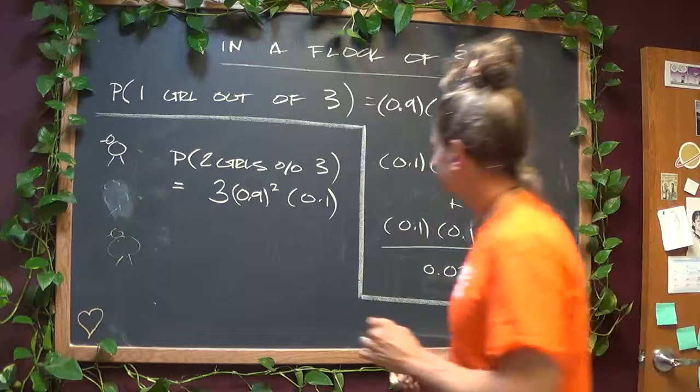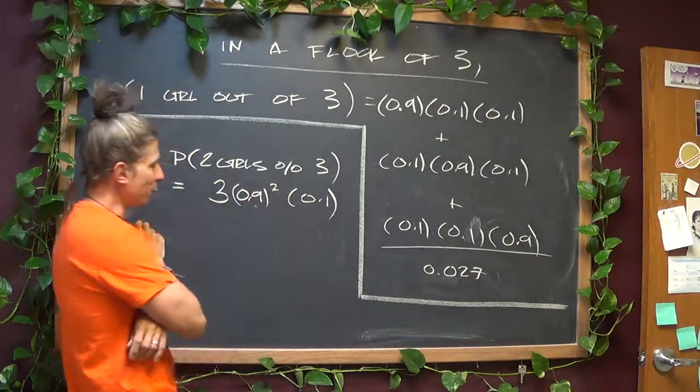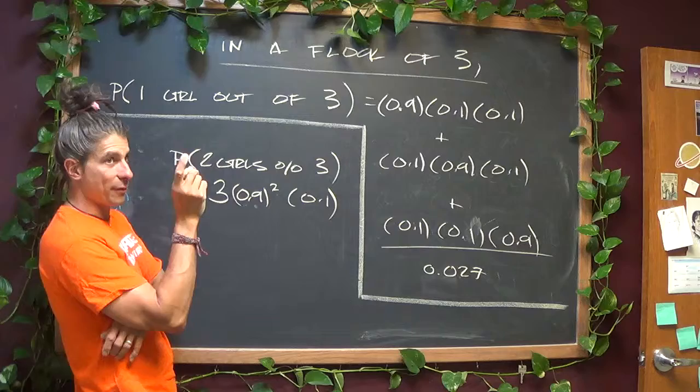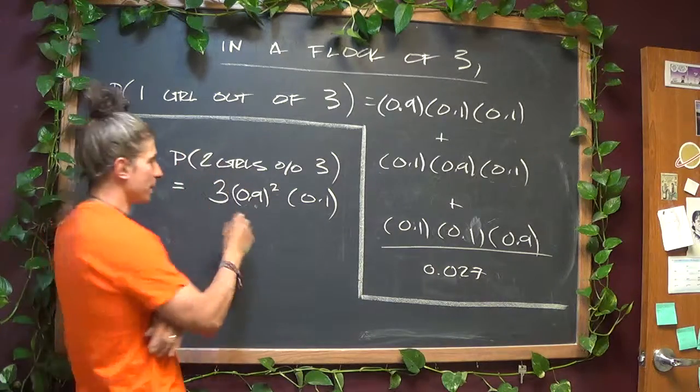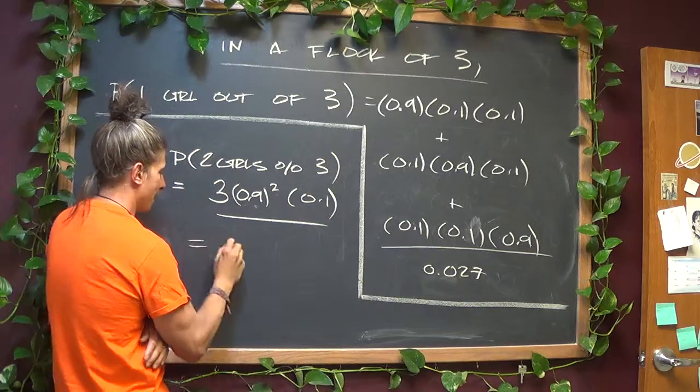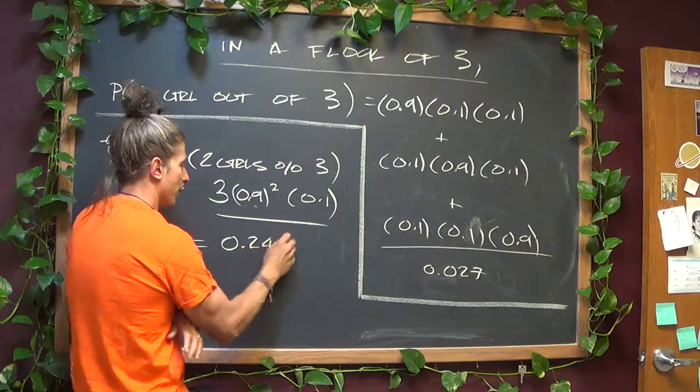Let's calculate this. 0.9 squared is 0.81, 0.081, we had that from before, 0.081 times 3 should be 0.243.